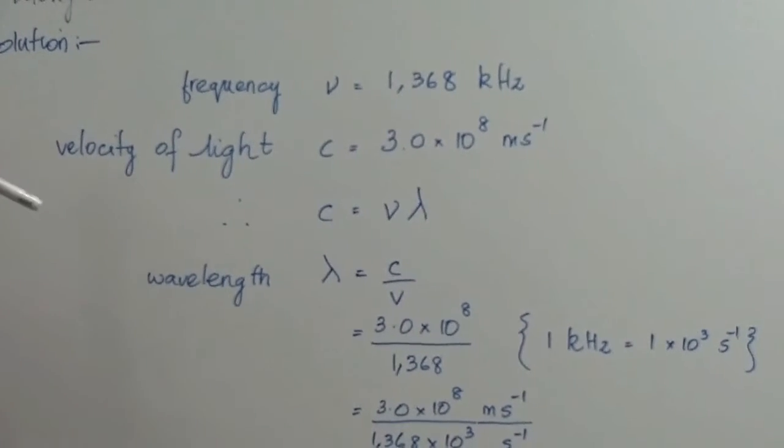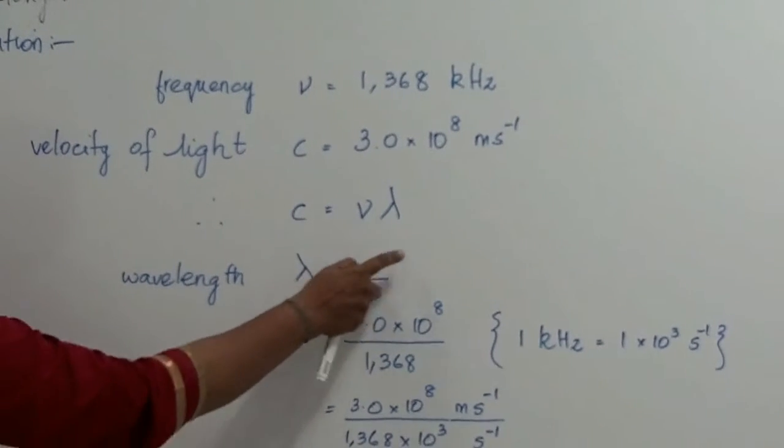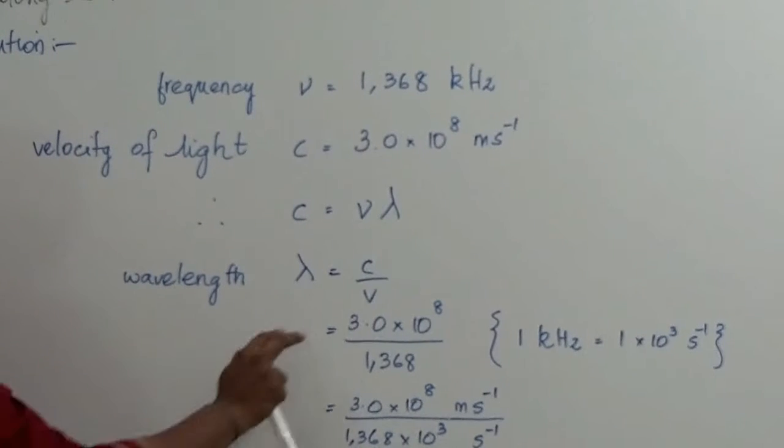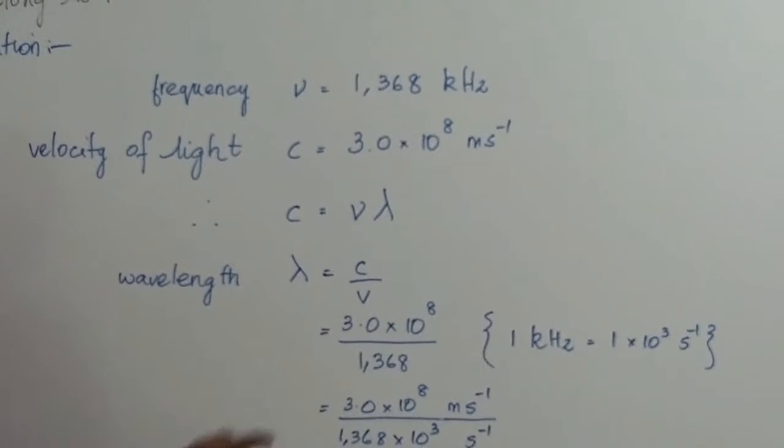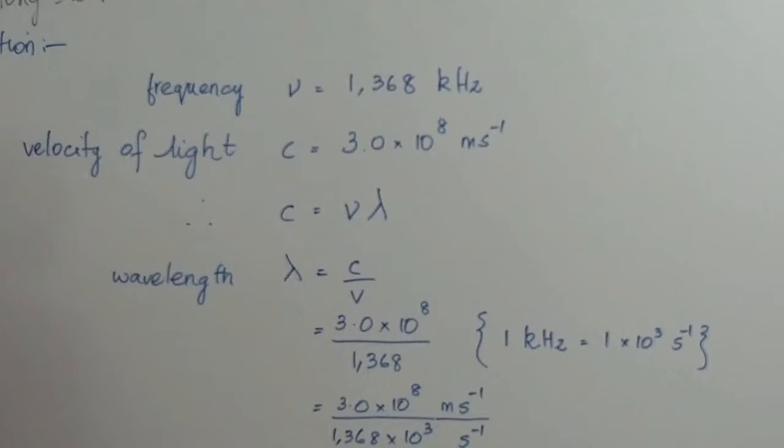So, we need to find out the wavelength. We have lambda equals C divided by V. We substitute the values. Here, we also can note that 1 kHz is equal to 1 times 10 to the power of 3 per second.